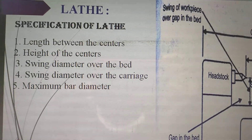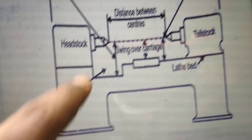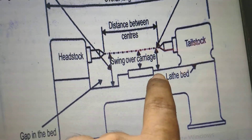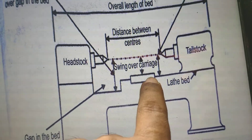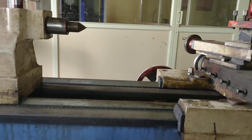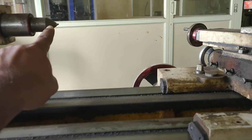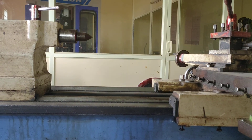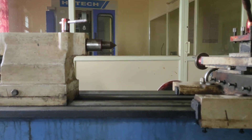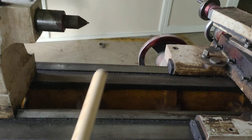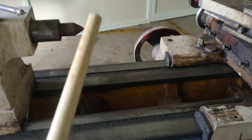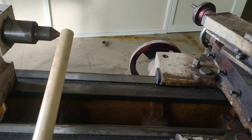Then we have one more specification: height of the centers. This is the height of the center — from the axis of the centers to the top surface of the bed. For most textbooks, it is mentioned as the distance between the dead center to the top of the bed.